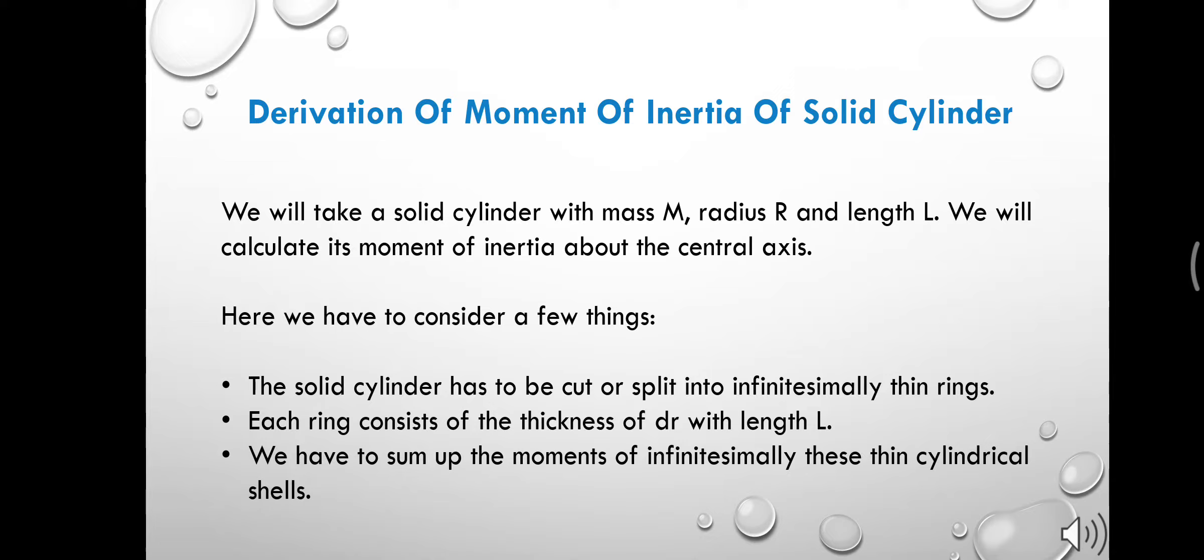We will calculate its moment of inertia about the central axis. Here we have to consider a few things. The solid cylinder has to be cut or split into infinitesimally thin rings, and each ring consists of the thickness of dr with length L. We have to sum up the moments of infinitesimally these thin cylindrical shells.